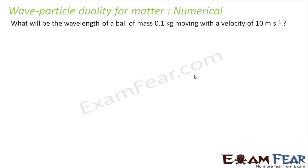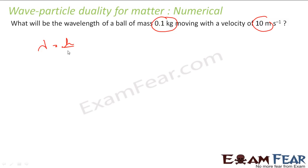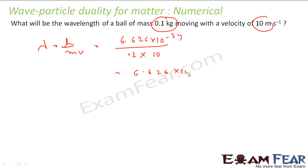We will take some examples on this wave nature or dual nature. What will be the wavelength of a ball of mass 0.01 kg moving at a speed of 10 m/s? Very simple — same formula: λ = h/mv. Applying the formula, h is Planck's constant 6.626×10⁻³⁴, mass is 0.1 kg, and velocity is 10 m/s. This comes out to be 6.626×10⁻²⁴ m — a very small value.